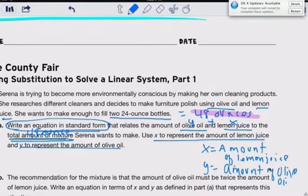Write an equation. So it's X plus Y equals 48 ounces. The amount of olive oil plus the amount of lemon juice has to equal 48 ounces altogether.